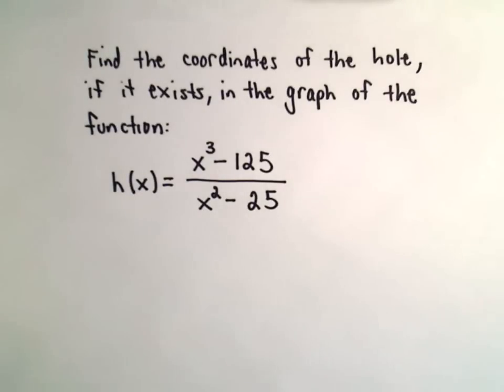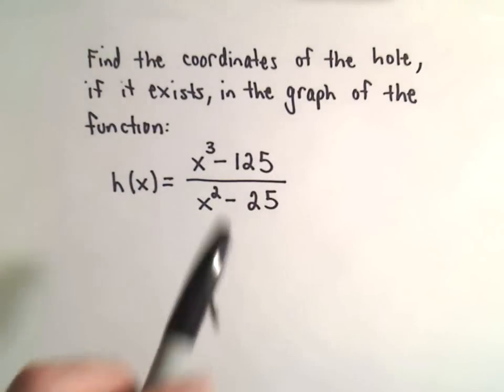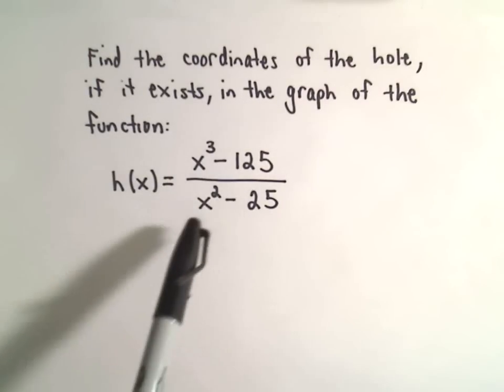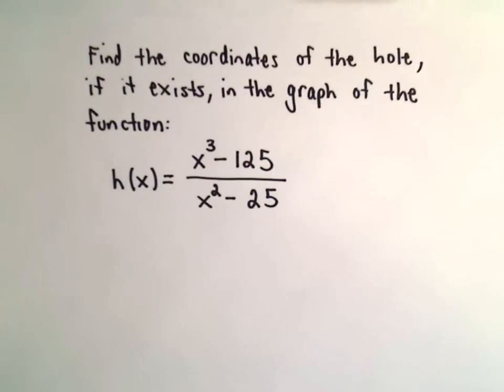Alright, so in this example we're going to find the coordinates of a hole in the graph if it exists for our rational function x cubed minus 125 over x squared minus 25.